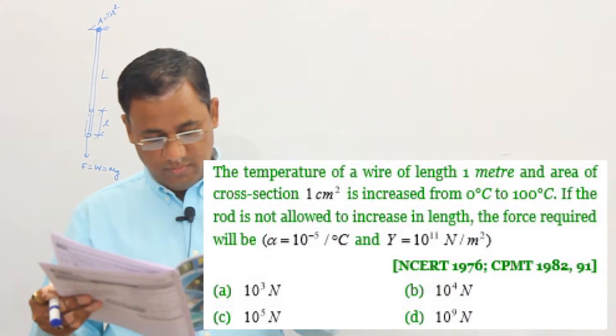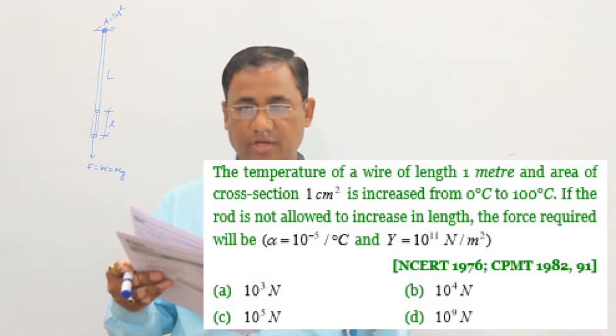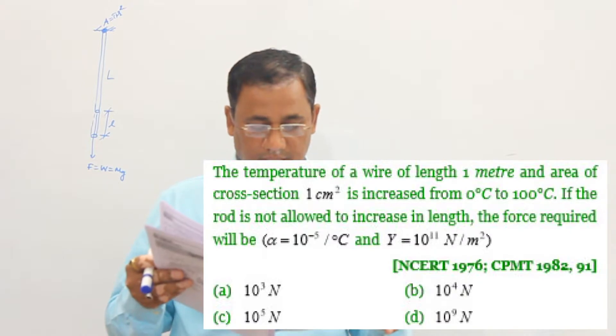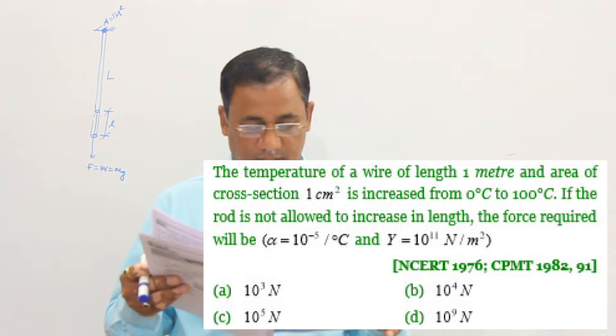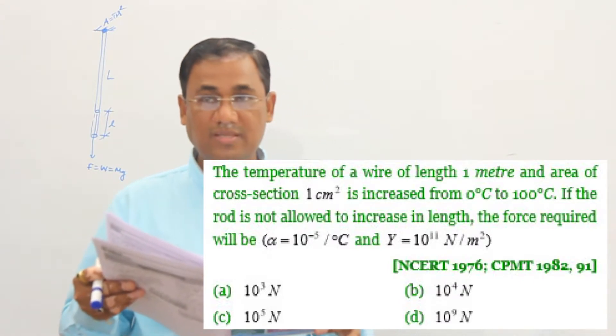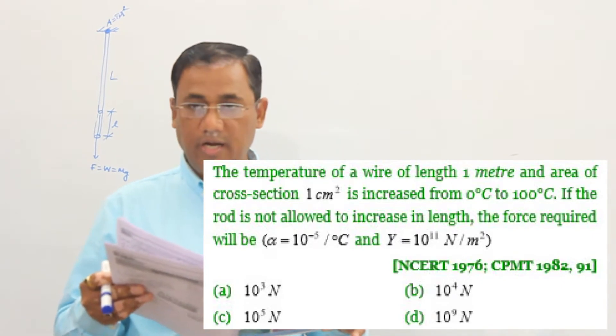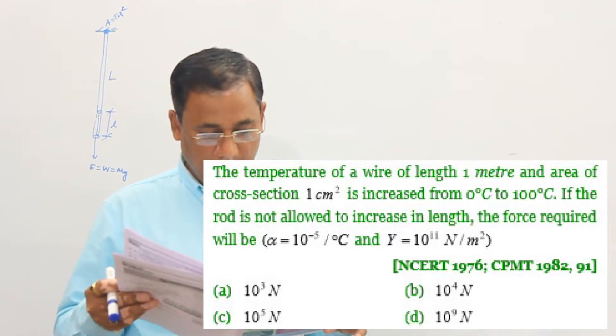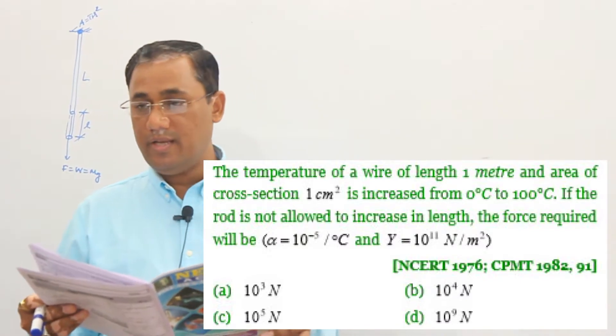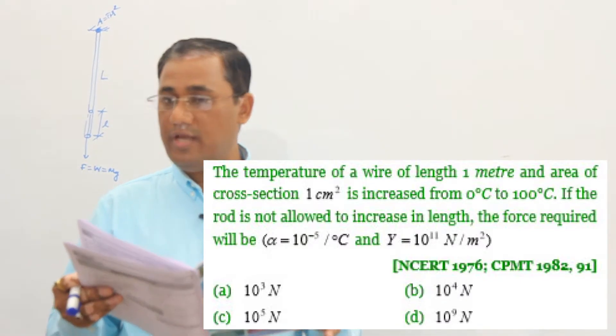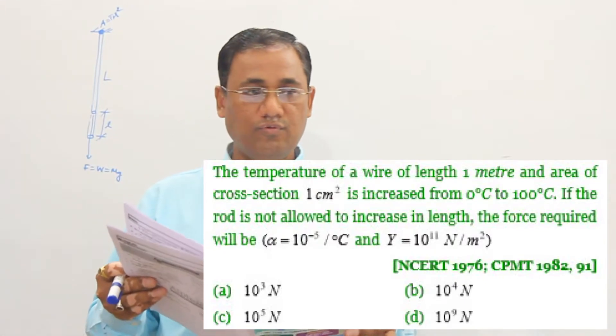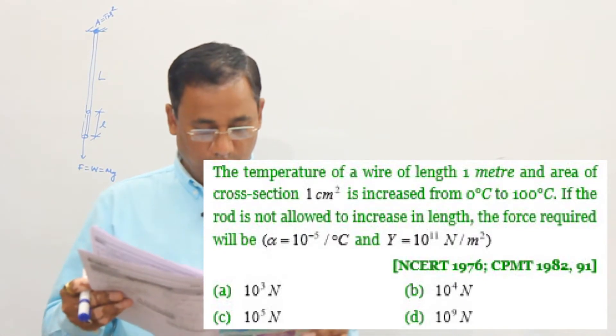The temperature of a wire of length 1 meter and area of cross-section 1 cm² is increased from 0°C to 100°C. If the rod is not allowed to increase its length, then how much force will it develop? What will it develop?